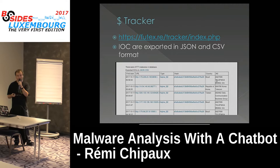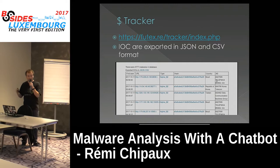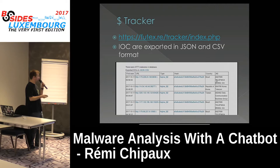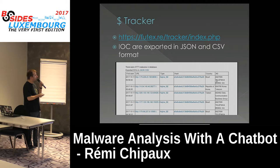I also export this data on a tracker page on my blog. The same data you see in the bot is visible there: the first-seen address, the sample drop site, the malware type (e.g., Hachimai), the hash, the country, and the provider name.